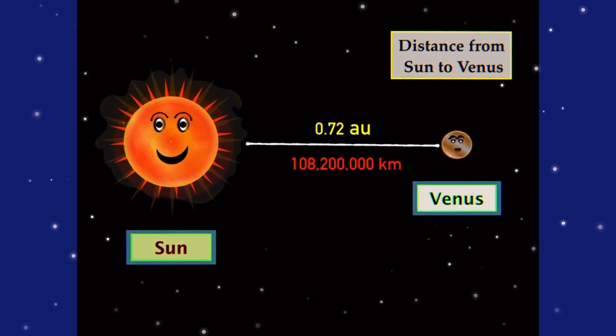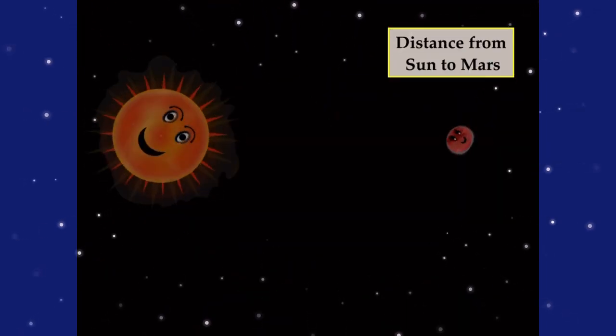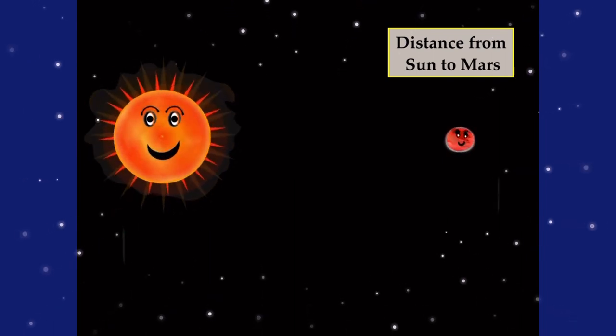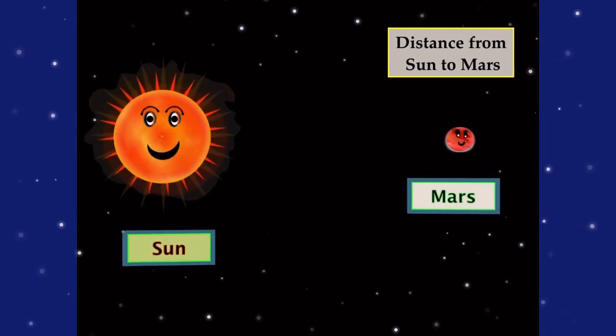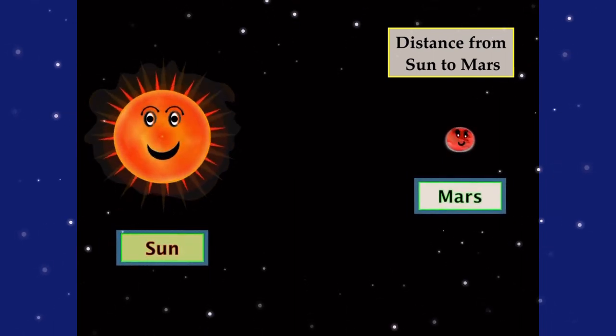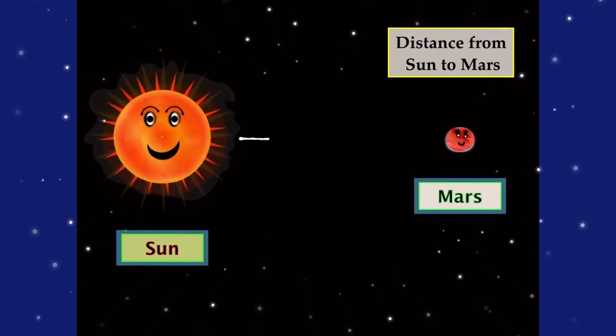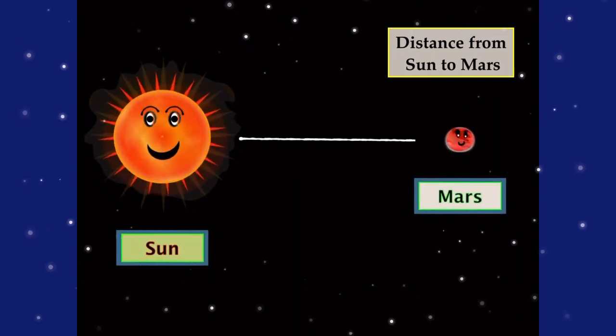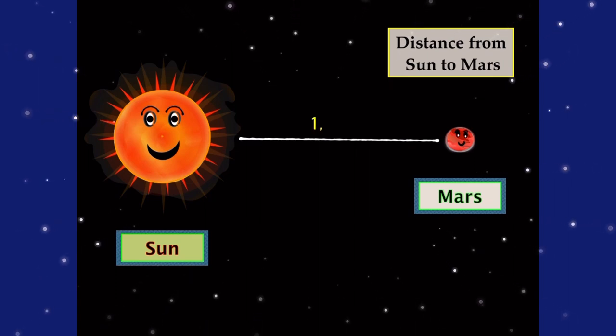And now we have the distance from the Sun to Mars. Mars is also known as the red planet, and it is 1.52 AU.